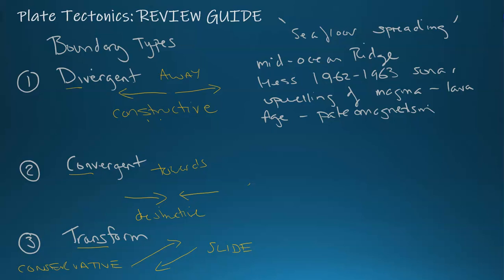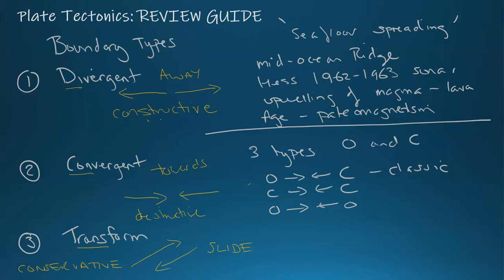Convergent comes in three types based on the two crust differences. We have the ocean plate and the continental plate. So we have ocean that collides with continental, that's the classic. You have continental smashing against continental. You have ocean smashing against ocean. These three variations all have different features.